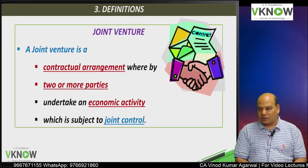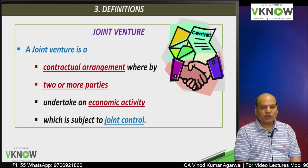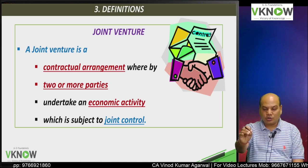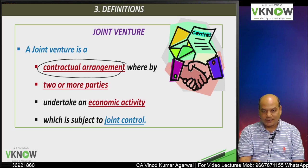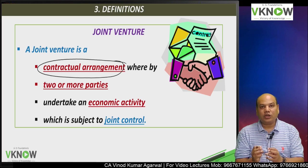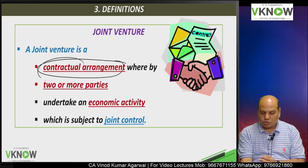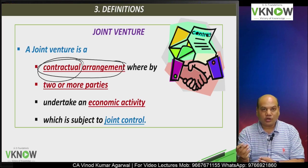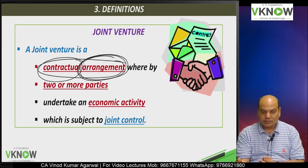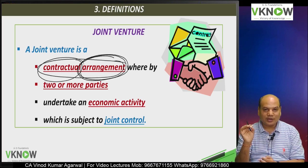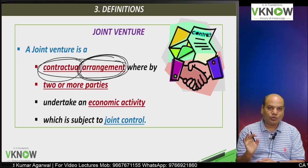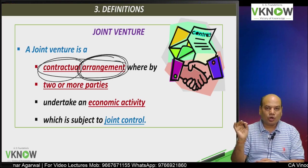Now we will see the meaning of the term joint venture as per AS 27. The meaning is what you already know — it is a contractual arrangement where two or more parties enter into a contract. A contract can be oral or in writing. In the contract they will define what activity they have to undertake, how much capital will be required, and how revenue, expense, or profit will be shared. All this will form part of the joint venture contractual arrangement.